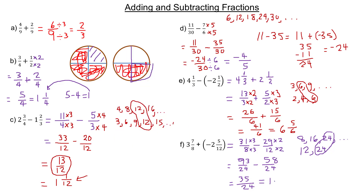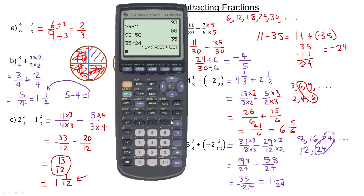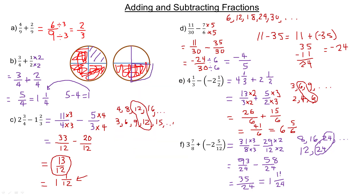We have a certain number of twenty-fourths here. In order to figure out what goes in the numerator, you would just take 35 and subtract that single 24 from it. So the numerator is 11, and this would be 11 twenty-fourths. So it's one and eleven twenty-fourths.